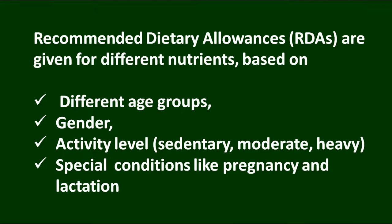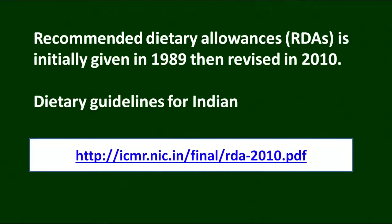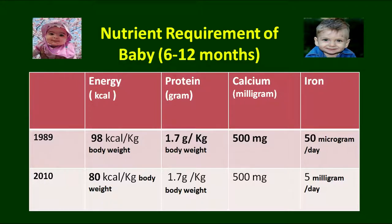Special conditions like pregnancy and lactation are natural conditions but they are special, so RDAs are given for these conditions. Initially RDAs were developed in 1989. After a long gap they were revised in 2010 and are available on the website and in the book 'Dietary Guidelines for Indians.' We will talk about some of the important age groups. The 1989 RDAs are also given in your senior secondary level textbook, and the updated version is given alongside.